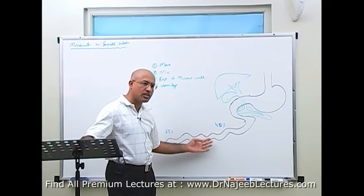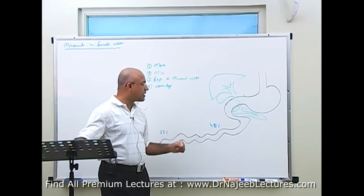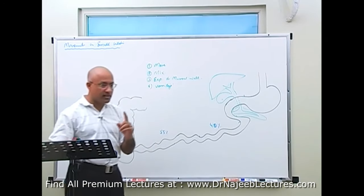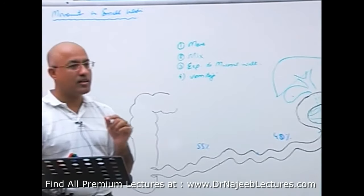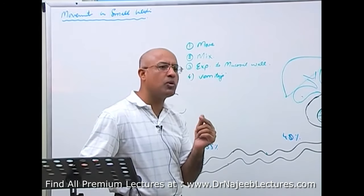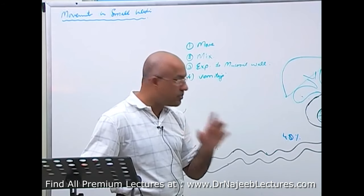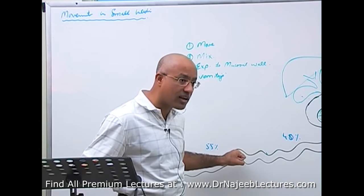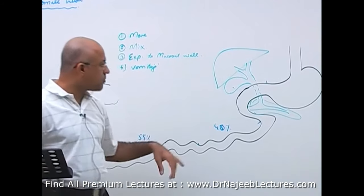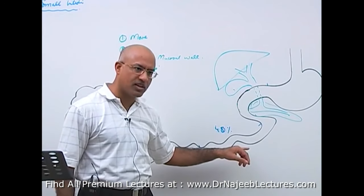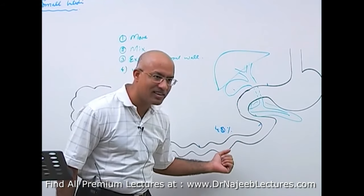The small intestine has two types of muscles: the muscularis mucosa in the mucosa, and the muscularis externa. The major movements are not produced by the muscularis mucosa. Major movements are produced by the muscularis externa — the circular layer and longitudinal layer — which is a thick layer of muscles. The muscularis mucosa is a very thin sheet of muscles.